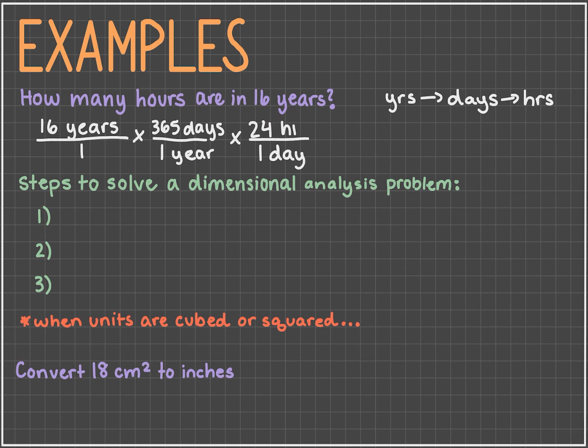When we multiply 16 times 365 times 24, we get 140,160. And the unit is hours since the other units cancel out.